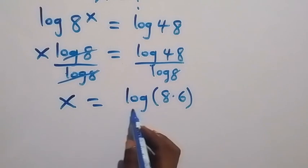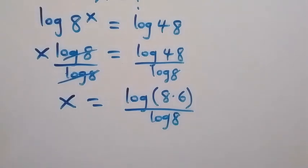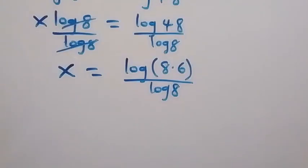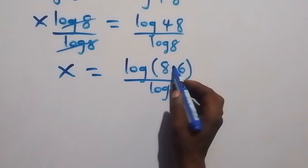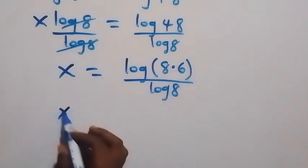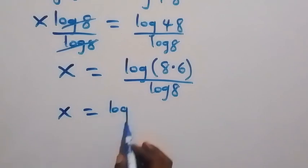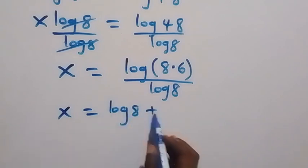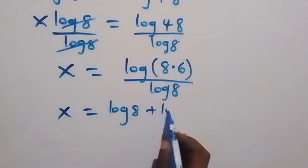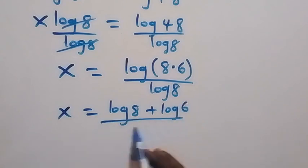We can break this down as log of 8 times 6, since 8 times 6 gives us 48, divided by log 8. In the next step, we can separate log(8×6) into two logs. Since we are multiplying, it will be the sum of two logs, so we have x equals log 8 plus log 6, all divided by log 8.